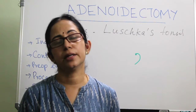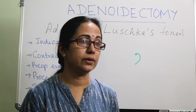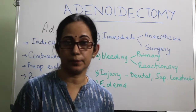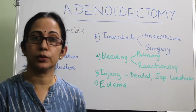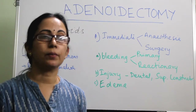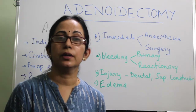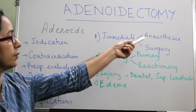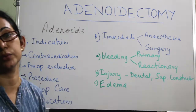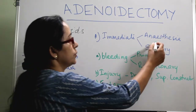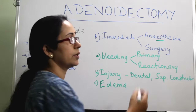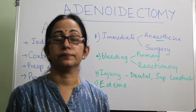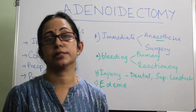The patient is asked to come back if there is any fresh bleeding from the nose or mouth; otherwise, the first follow-up is after 5-7 days. Start analgesics, anti-inflammatory agents, and antibiotics. The child or patient will usually complain of earache in the post-operative period, which is due to glossopharyngeal neuralgia, and it is usually relieved with analgesics.